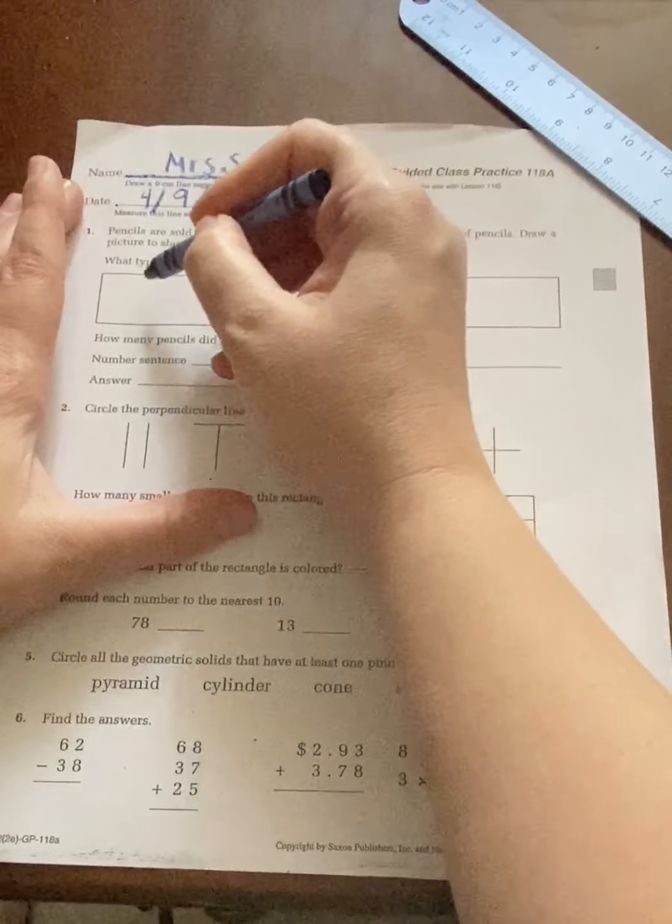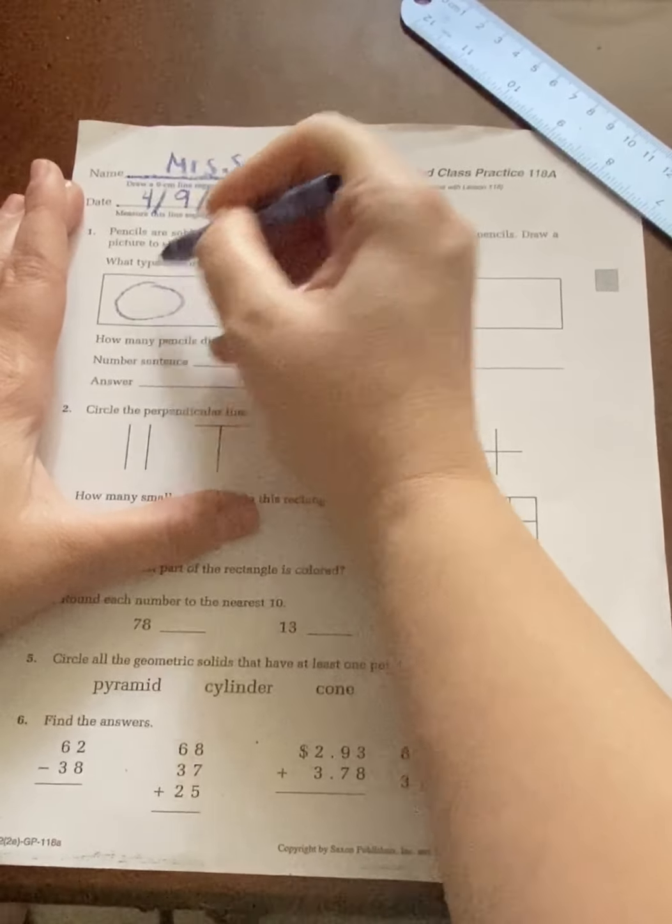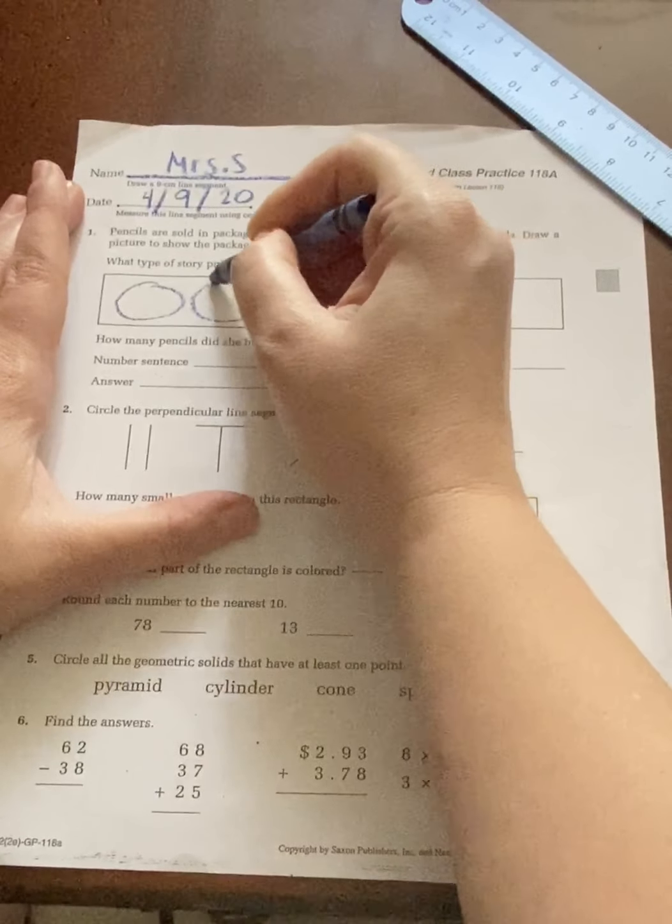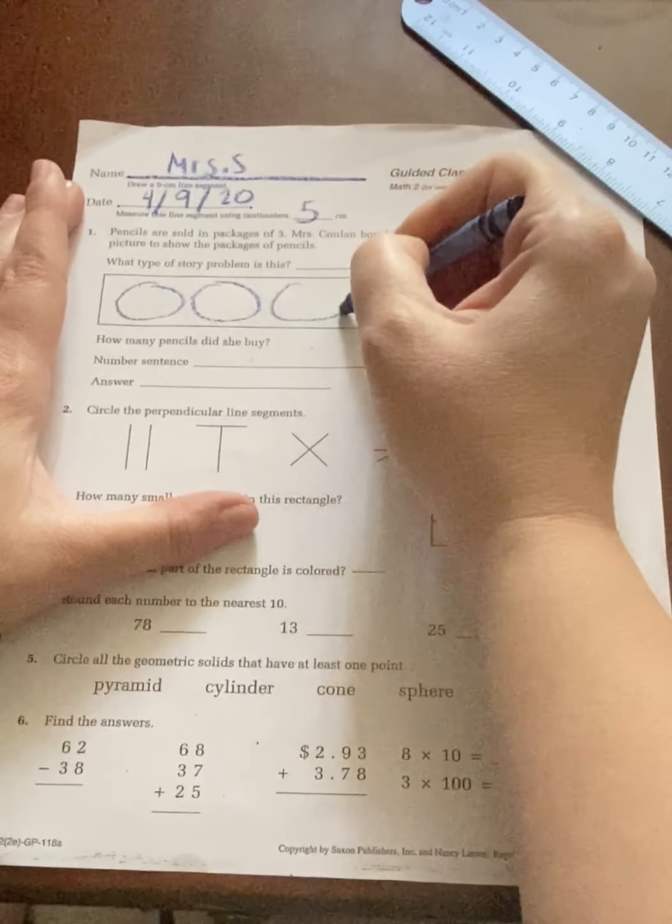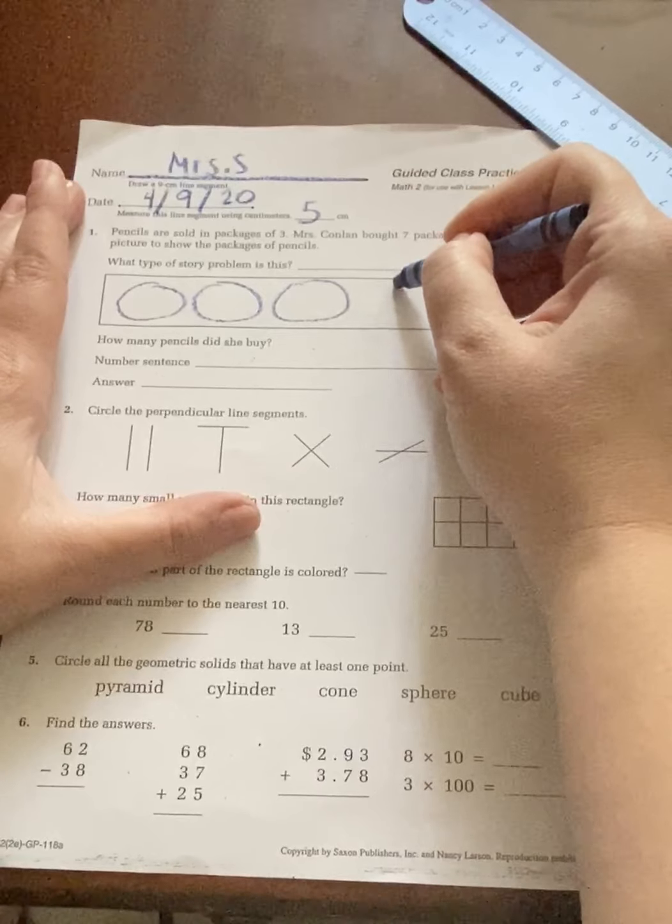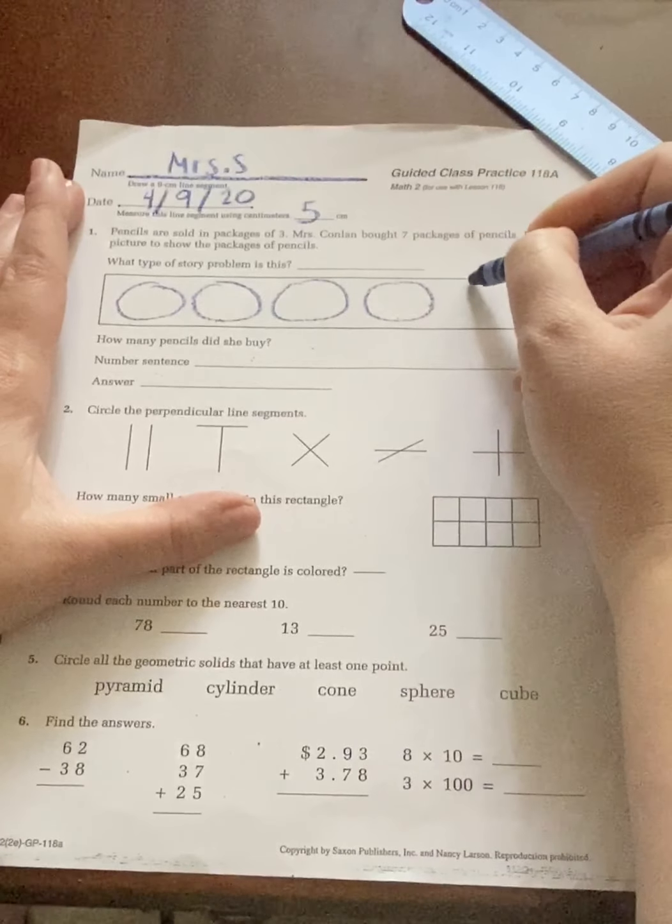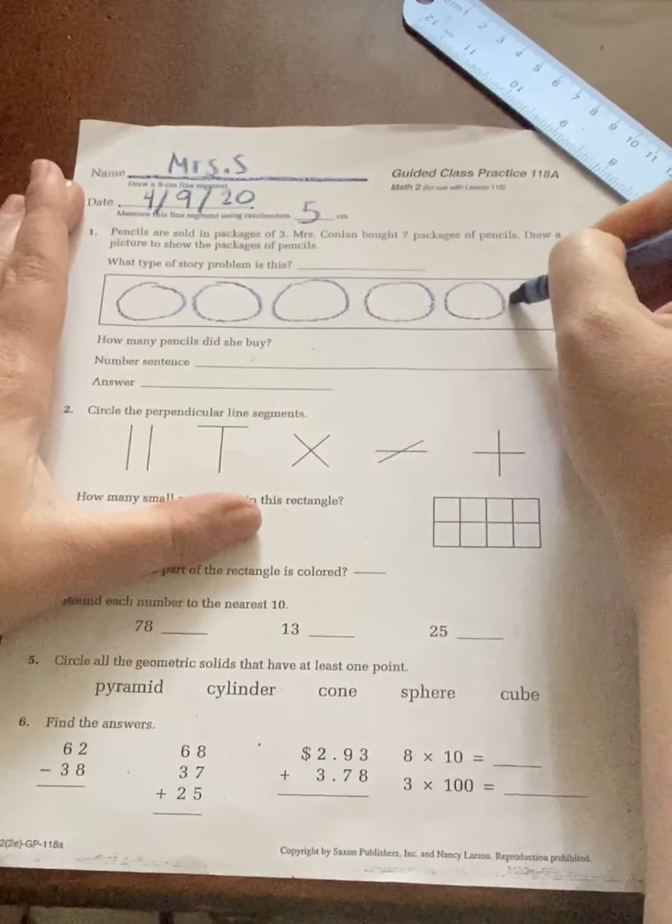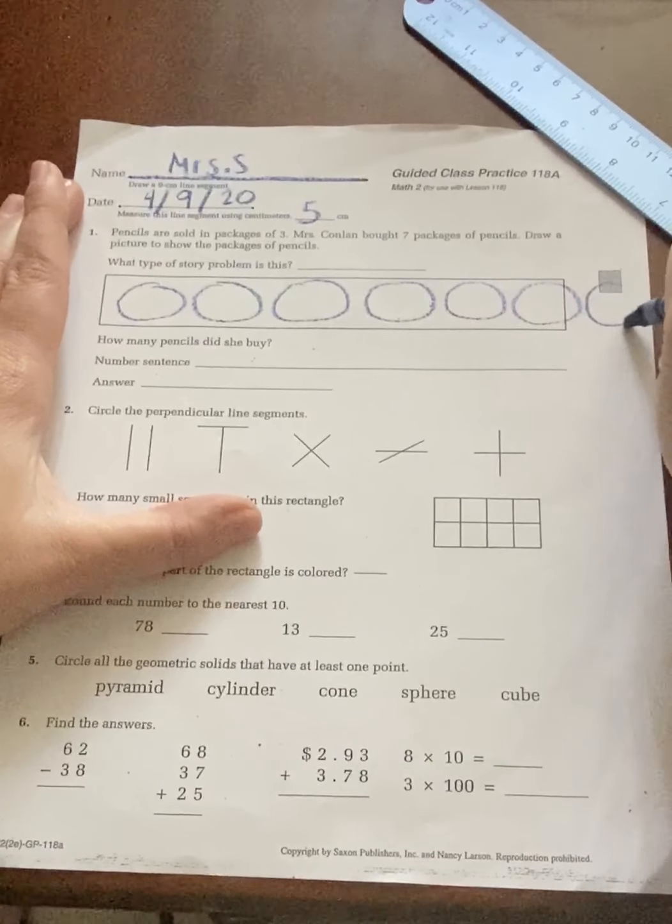And then she bought seven packages. So let's go ahead and just draw seven big circles first. One, two, three, four, five, oops, I'm running out of room, six, and seven.